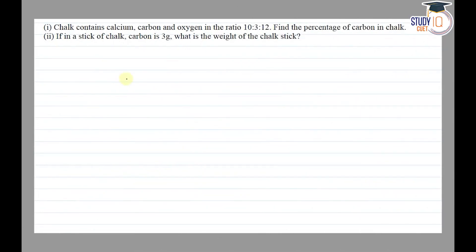Hello everyone, this question appears in Class 7th NCERT chapter on comparing quantities. This is the seventh question of exercise 8.3. The question says that chalk contains calcium, carbon, and oxygen in the ratio 10:3:12. Find the percentage of carbon in chalk. And if in a stick of chalk carbon is 3 grams, what is the weight of the chalk stick?